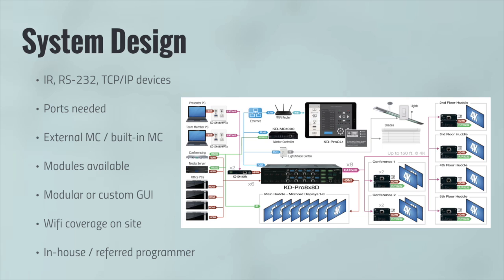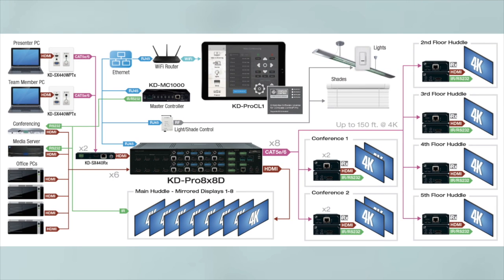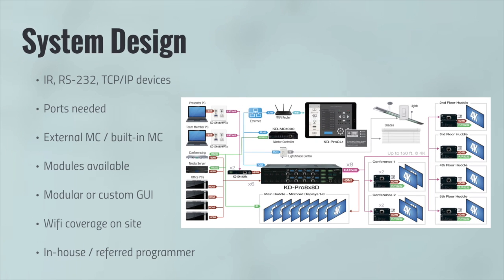When designing systems around our Compass Control Pro, you need to tally up how many IR, RS-232, and TCP/IP devices there are for control. IR and RS-232 devices require one port each; IP devices are controlled directly from the iPad. If you have a Key Digital video system, determine whether it has an external or built-in master controller, or whether you'll need to purchase an external master controller. When considering non-Key Digital products, prioritize devices that we already have modules built for. Also ensure the site has thorough coverage of the network and Wi-Fi on site.